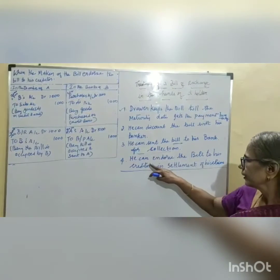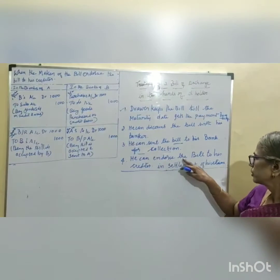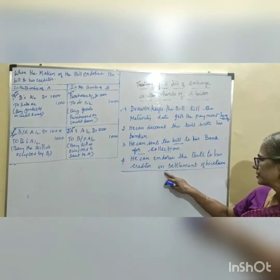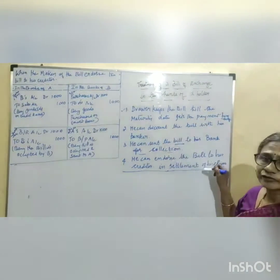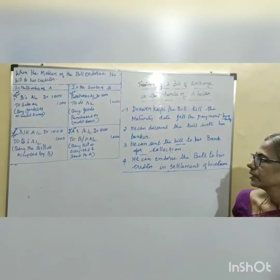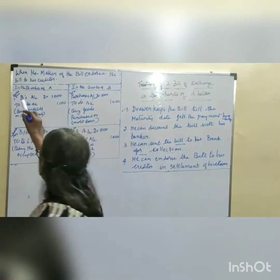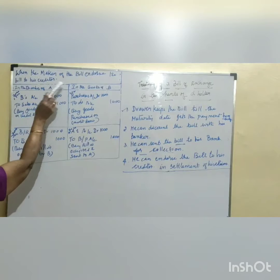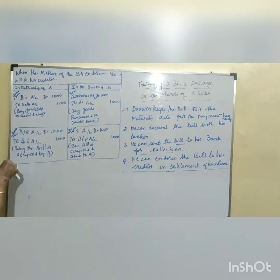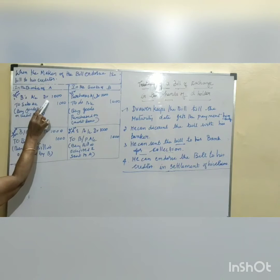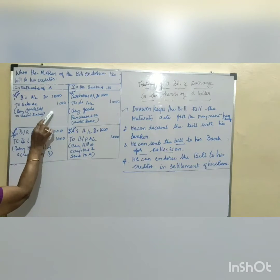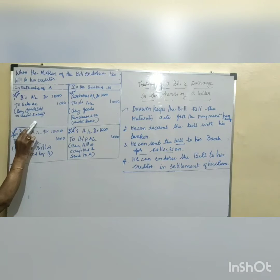Under condition number 4, he can endorse the bill to his creditor in settlement of his claim to the maker of the bill. The drawer of the bill can settle his claim. When the maker of the bill endorses the bill to his creditor, what will be the journal entries? In the books of A, B's account is debited with 1000 rupees to sales account, being goods sold to B on credit basis.